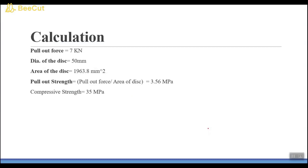Let's suppose the pullout force came out 7 kN and dimension of circular disc is 50mm and the area is 1963.8 mm square. So the pullout strength will be pullout force divided by area which is 3.56 MPa.